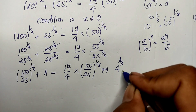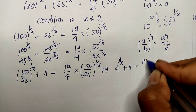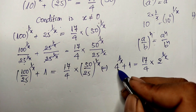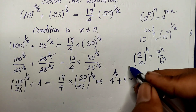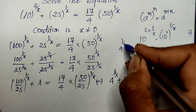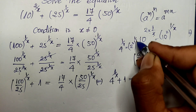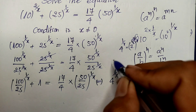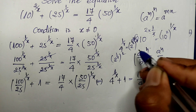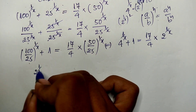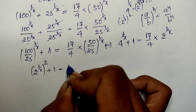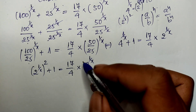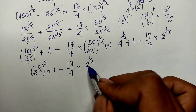Now we can rewrite 4 power 1 over h. Since 4 equals 2 squared, we write 2 squared power 1 over h, and multiplying the exponents gives us 2 power 1 over h, squared. So the equation becomes: 2 power 1 over h, squared, plus 1, equals 17 divided by 4, multiplied by 2 power 1 over h. We notice 2 power 1 over h appears in both terms.